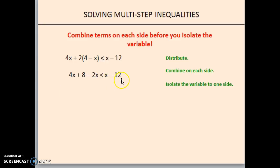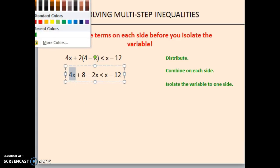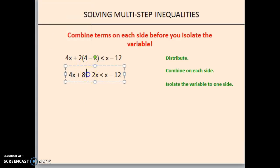Now, we will combine our like terms. Right here, we have 4x and here we have negative 2x. We want to recognize that those are on the same side of the inequality. 4x minus 2x is just 2x. So we have 2x plus 8 on the one side and still x minus 12 on the other side.